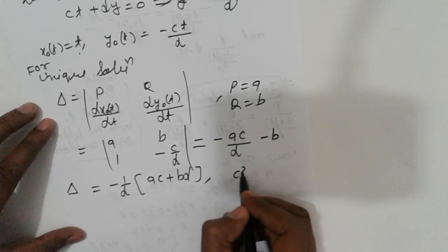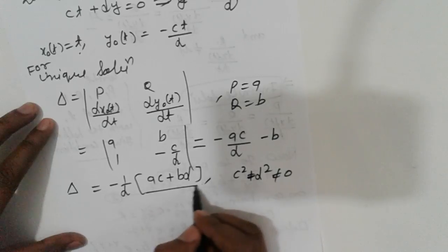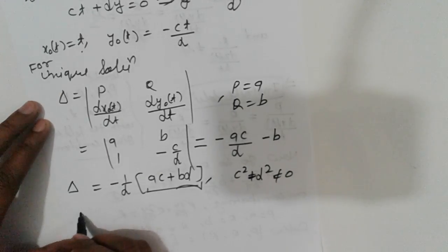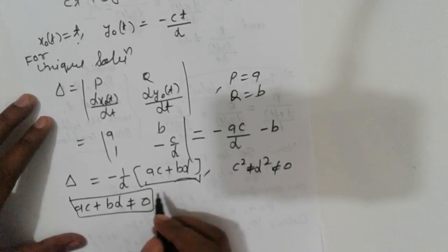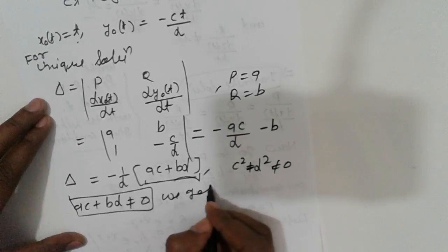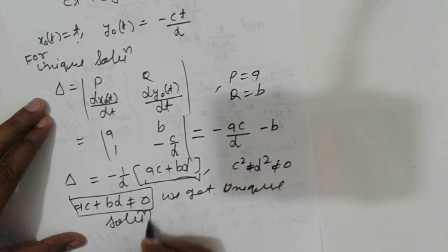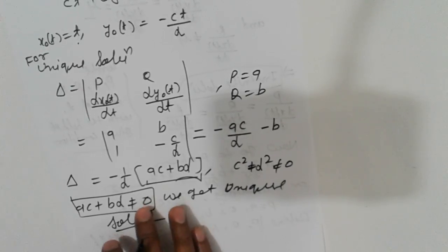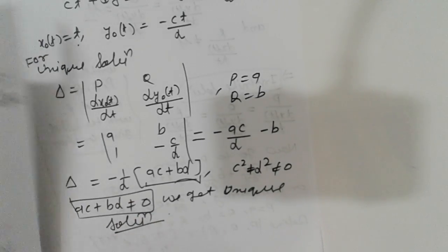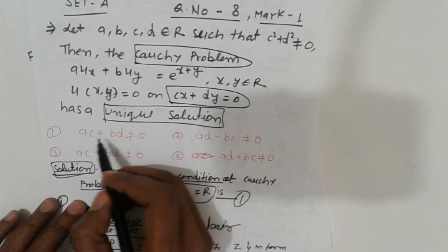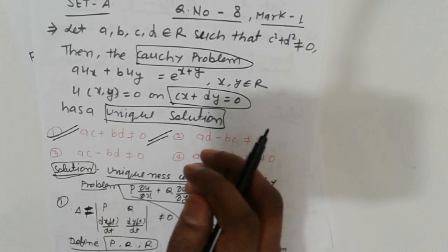So delta equals ac + bd. We are already given that c squared plus d squared is not equal to zero. Therefore, when ac + bd is not equal to zero, we get a unique solution. So the answer is option one: ac + bd ≠ 0. Thank you.